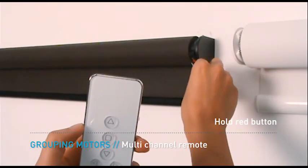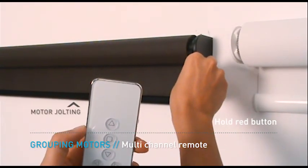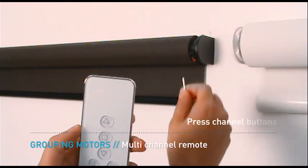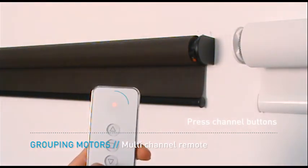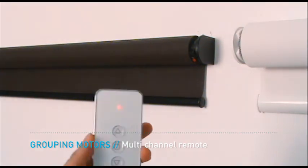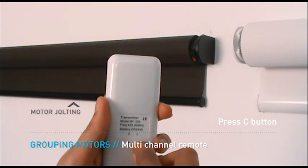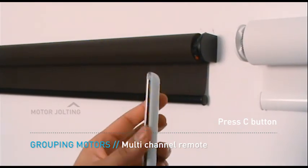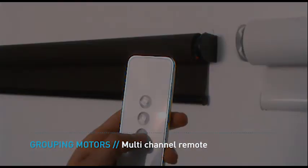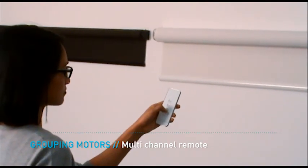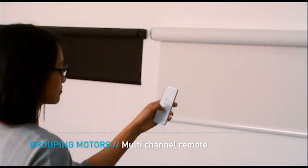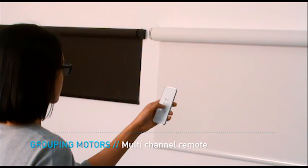Press the red button on the second motor until it jolts once. Select the group channel. The programming of two different motors can now be operated simultaneously via the additional group channel.